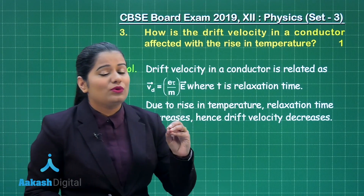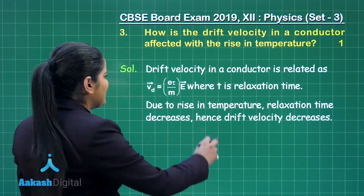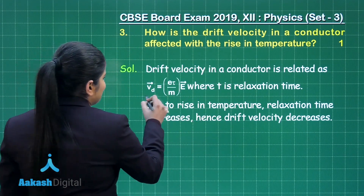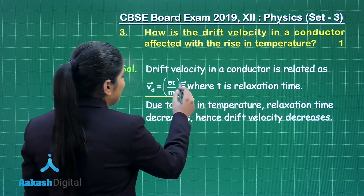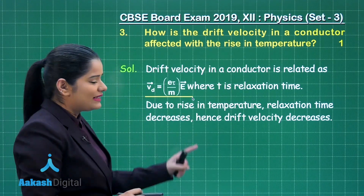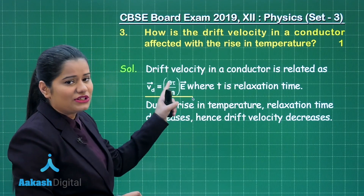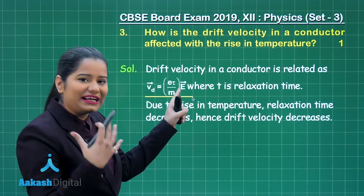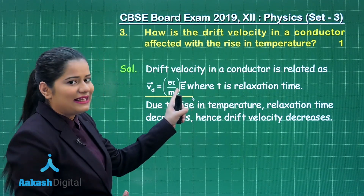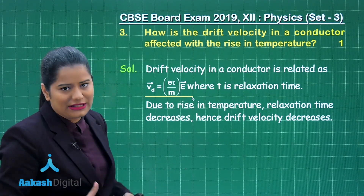We know that the drift velocity is given by the formula eEτ/m, where e is the charge on the electron, τ is the relaxation time, E is the electric field, and m is the mass of the electron.